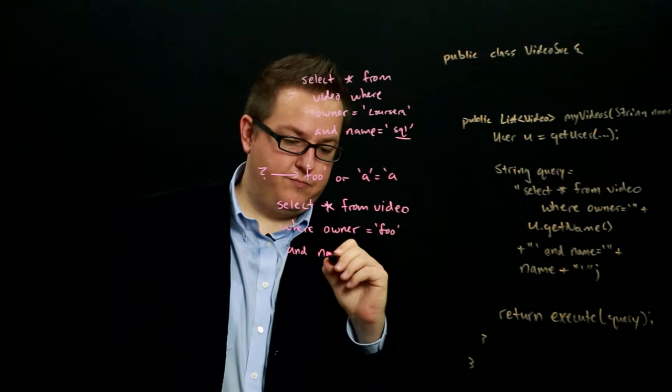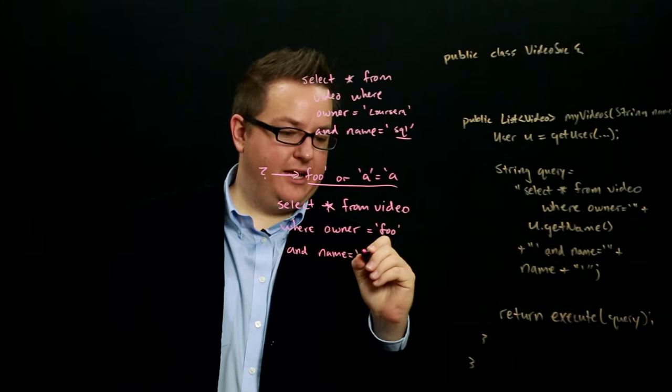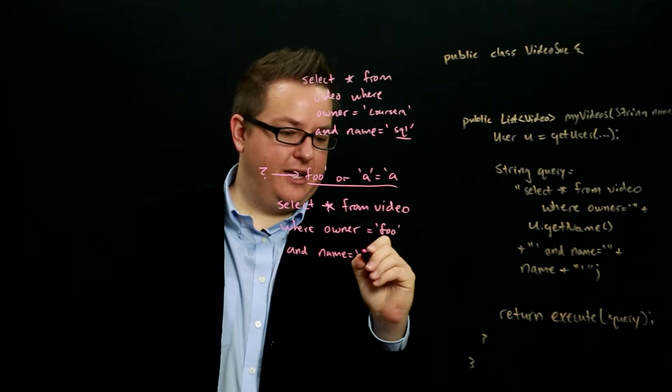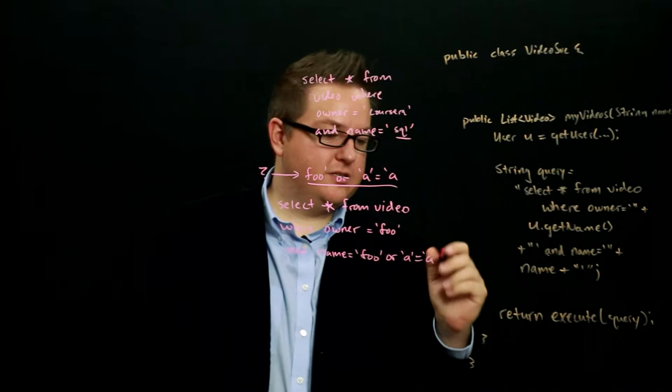Now, we're going to add on this value right here. And what we get is Foo or A equals A and then we've got the closing quotation mark or apostrophe.